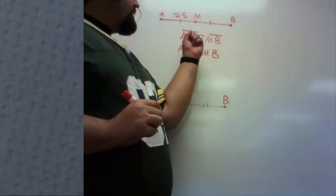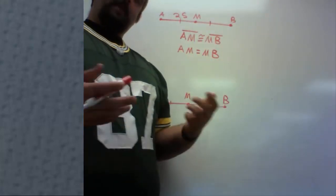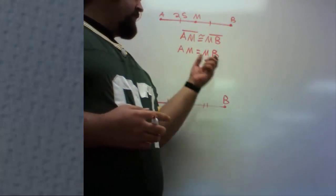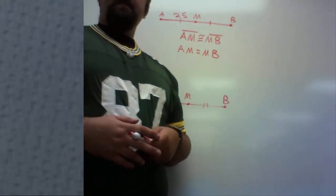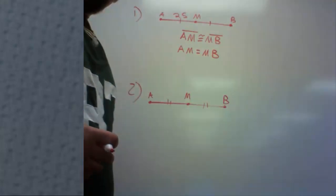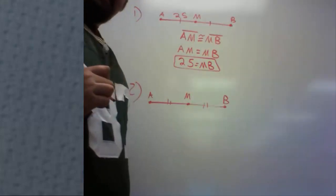Because I knew M was a midpoint, I could say that segment AM is congruent to segment MB. And then once I know those two segments are congruent, I can now say those two lengths are equal. And at this point, I just plug in what I know. I know length of segment AM is 25. That also means length of segment MB is 25. And that is one of my answers.